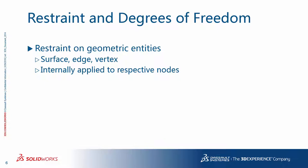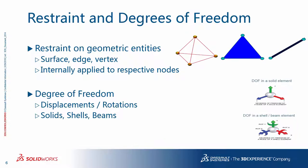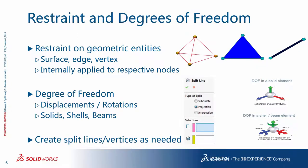In SOLIDWORKS simulation, restraints are applied on geometric entities, which include surfaces, edges, and vertices. With the model being meshed, the restraints are internally applied to the respective nodes and degrees of freedom — that is, the three translations and possibly three rotations — depending on the element type of solids, shells, and beams in the model. Sometimes you may want to apply a load or restraint on a portion of a surface or at a point where no vertex exists. In these cases, you can use the split line functionality within SOLIDWORKS to create subsurfaces, edges, and vertices as needed.